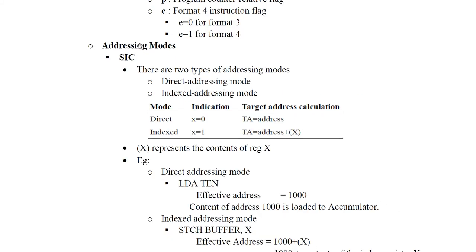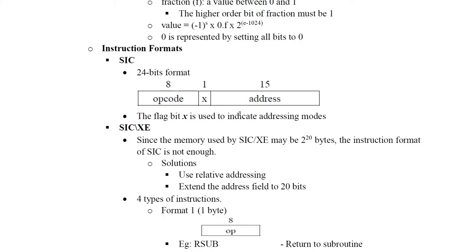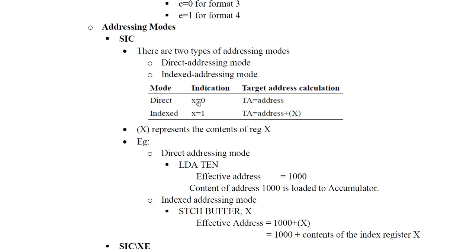Next is addressing modes. In SIC, there are two addressing modes: direct addressing and indexed addressing. X equals 0 means direct addressing, so the target address equals the address field. X equals 1 means indexed addressing, so the target address equals the address field plus the index register value. For example, with starting address 1000 and index value 3, we access location 1003.